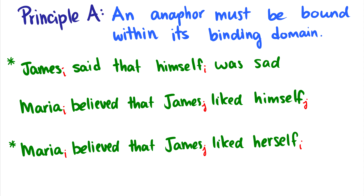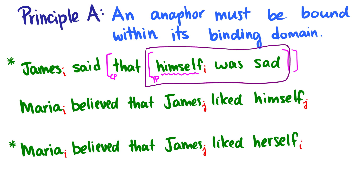I have three sentences here. The first one: 'James said that himself was sad.' This is an ungrammatical sentence. An anaphor must be bound within its binding domain. The binding domain of 'himself' is the smallest TP — 'himself was sad' is the inner TP. For an anaphor to make a grammatical sentence, it has to be bound within its binding domain. But 'James' is binding it outside of this TP, which is its binding domain. Therefore, it's ungrammatical.